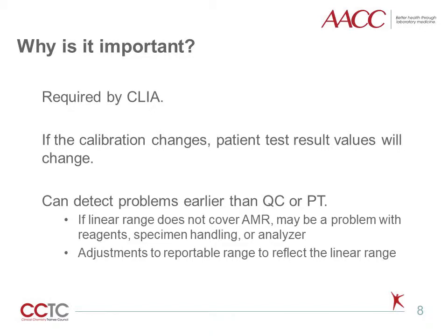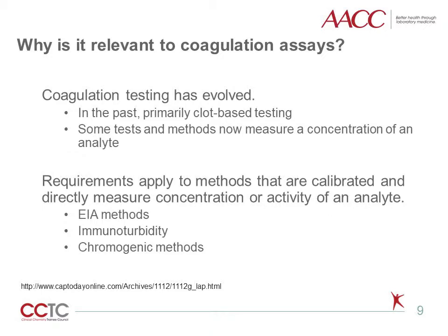Recalibration of a test system more frequently than every six months meets calibration verification requirements if the calibration includes samples with low, mid, and high values near the AMR. Beyond regulatory compliance, calibration verification is helpful for monitoring assay performance over time and for maintaining quality results. If the calibration changes, patient results will change. It may also detect accuracy and precision problems earlier than quality control or proficiency testing data. If the assay is shown to be nonlinear within the AMR, the laboratory is alerted to possible problems with reagents, specimen handling, or the instrument itself.